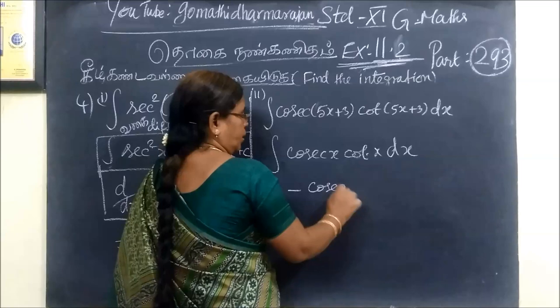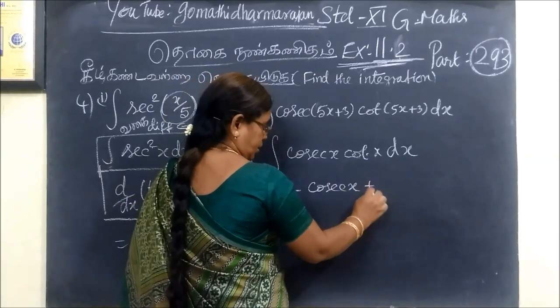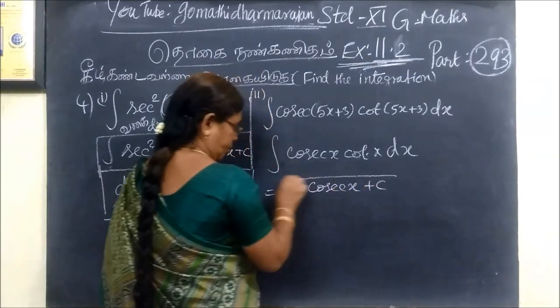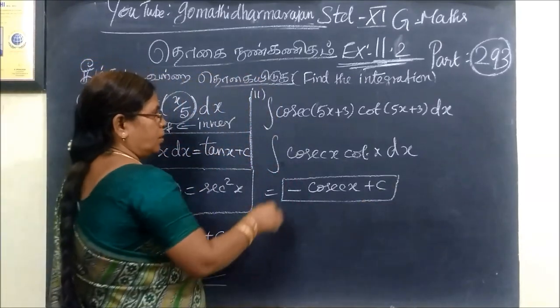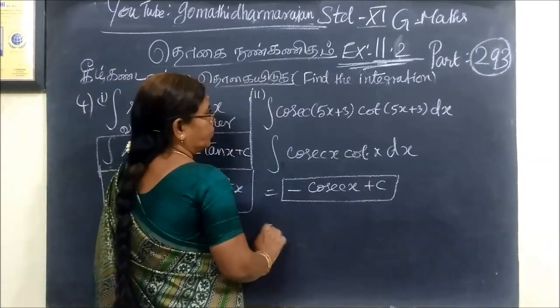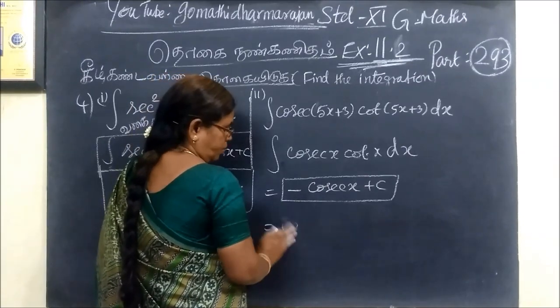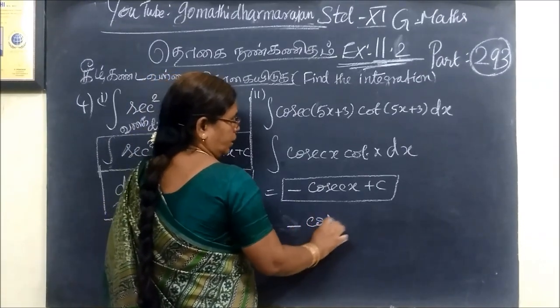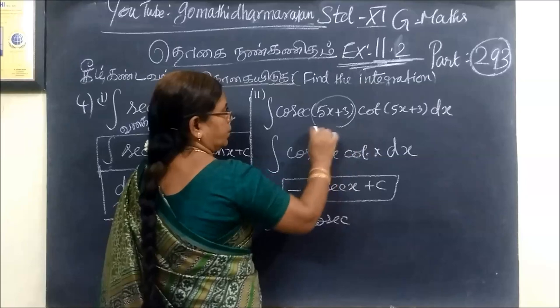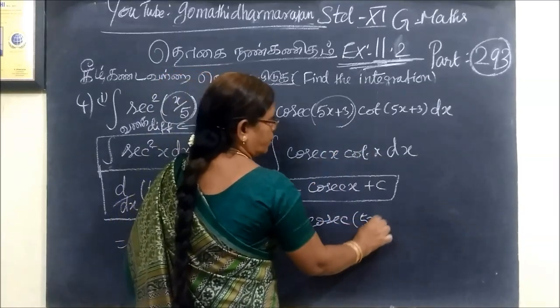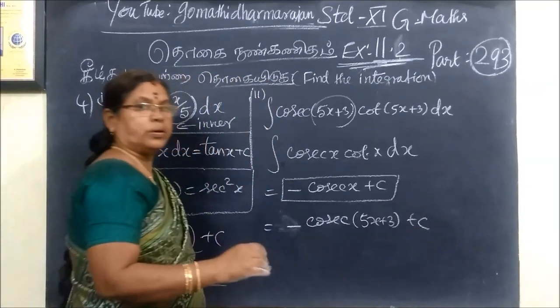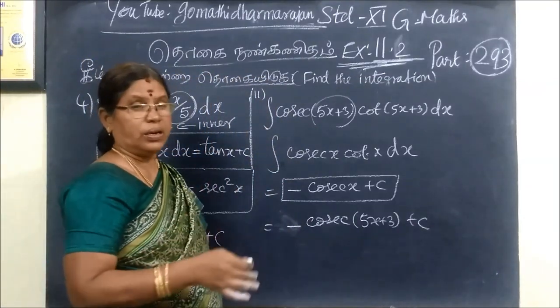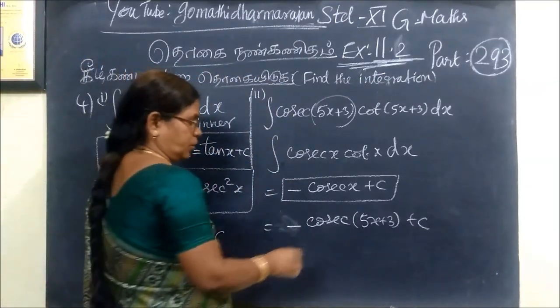So, minus cosecant x plus C. Here we are talking about minus. Cosecant is equal to 5x plus 3. Then, into inner function, divide by inner function.